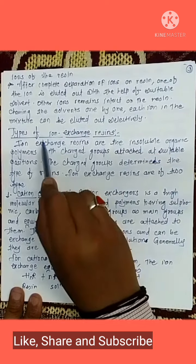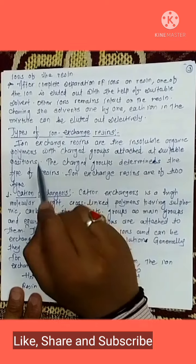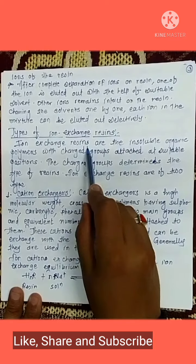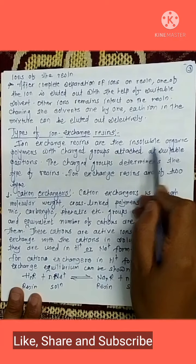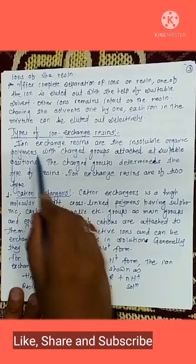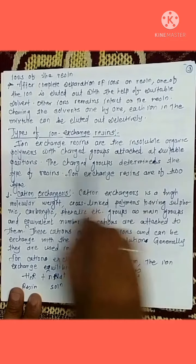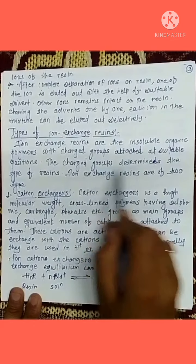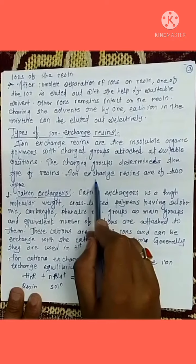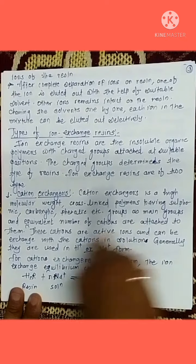Now we are going to see the types of ion exchange resins. Ion exchange resins are insoluble organic polymers with charged groups attached at suitable positions. The charge groups determine the type of resin. Ion exchange resins are of two types.